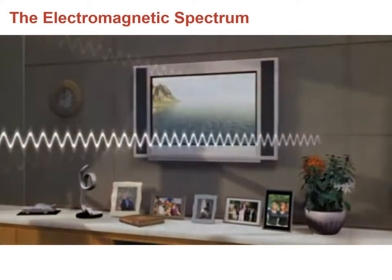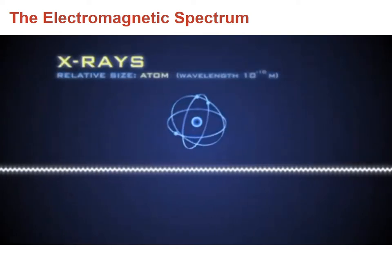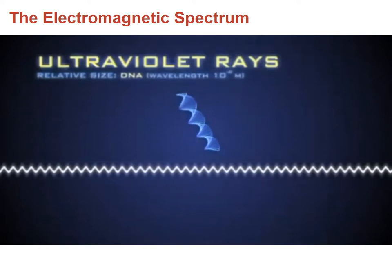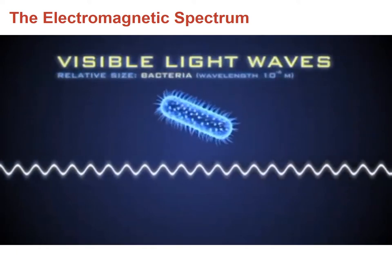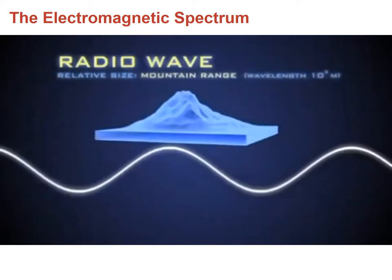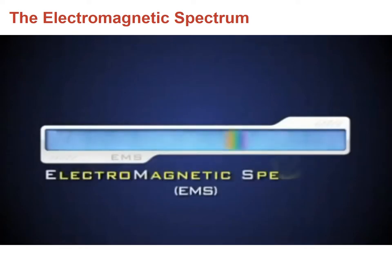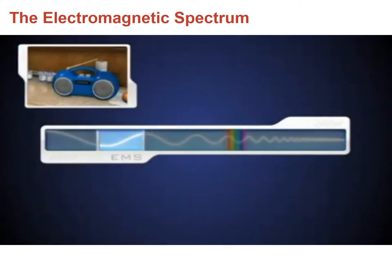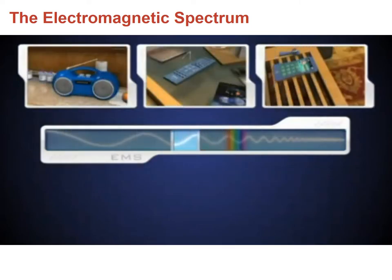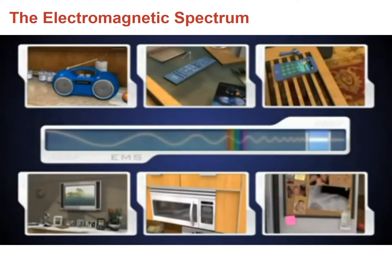These waves spread across a spectrum from very short gamma rays, to X-rays, ultraviolet rays, visible light waves, longer infrared waves, microwaves, and radio waves which can measure longer than a mountain range. This spectrum is the foundation of the information age. Your radio, remote control, text message, television, microwave oven, and even a doctor's X-ray all depend on waves within the electromagnetic spectrum.